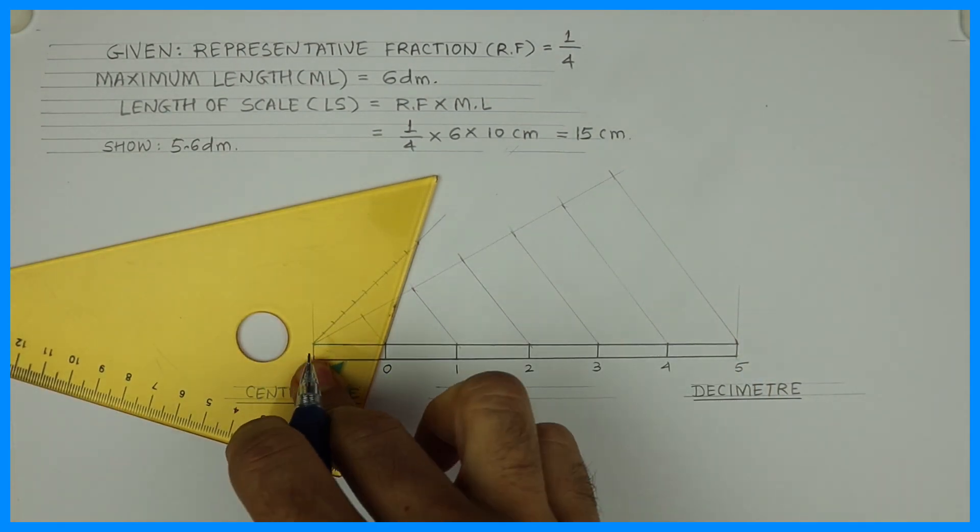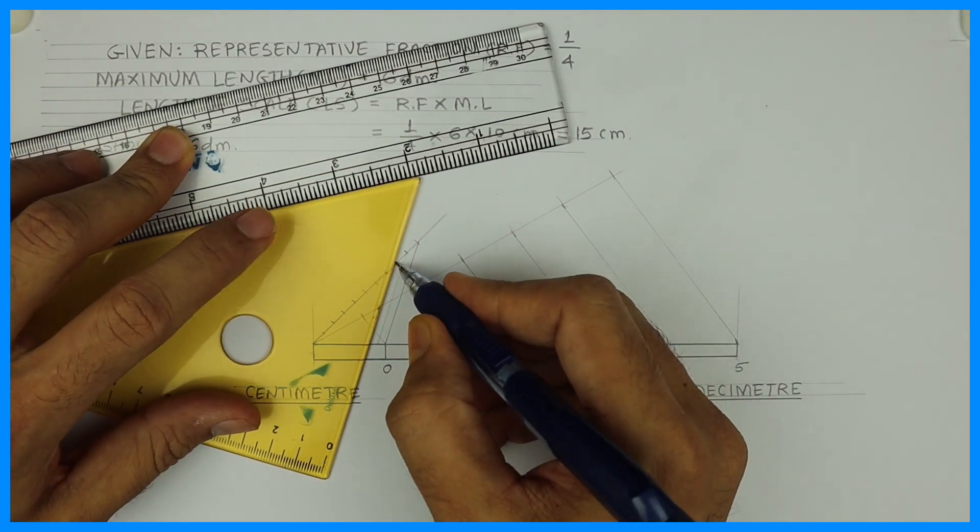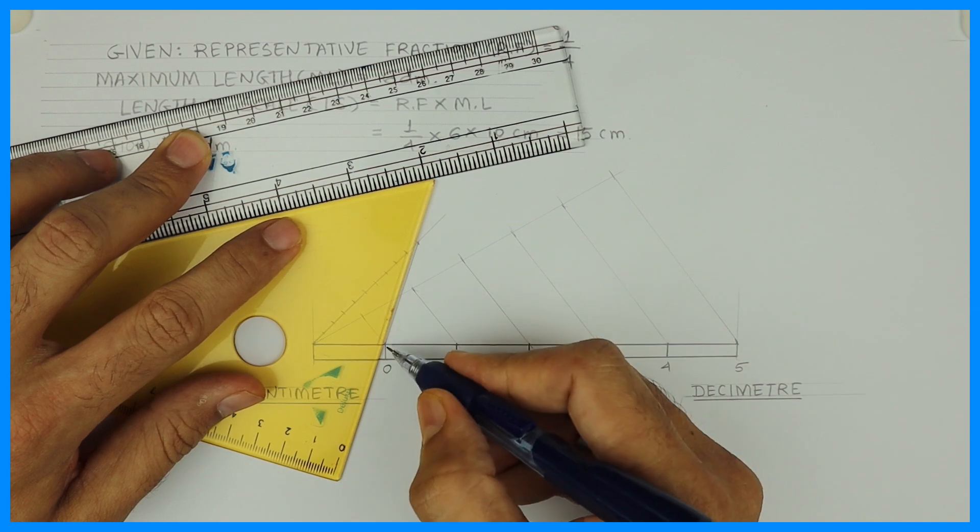So now you divide this into how many part? 10 part. So we are dividing first block into 10 part.